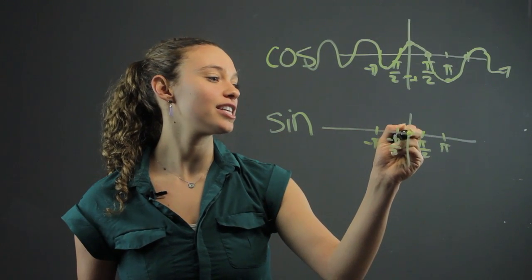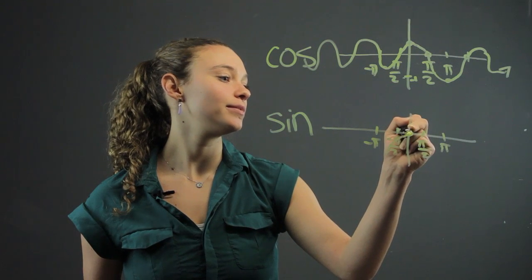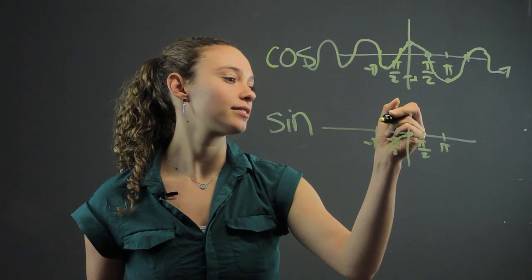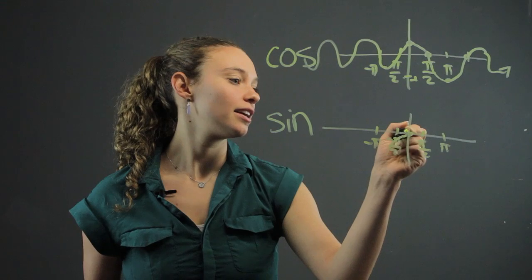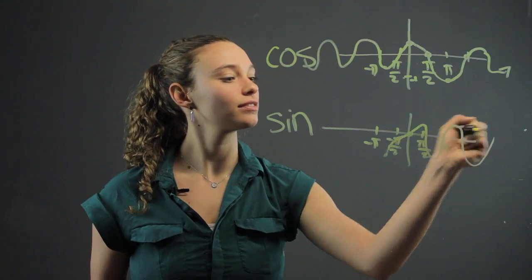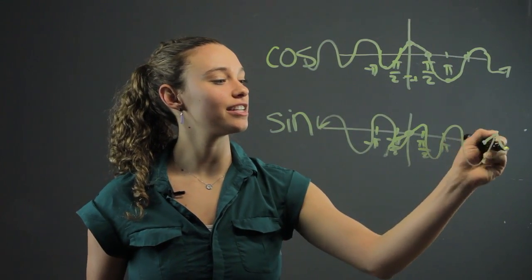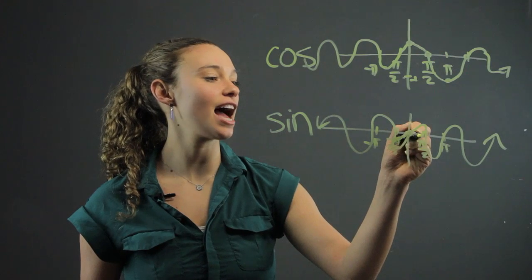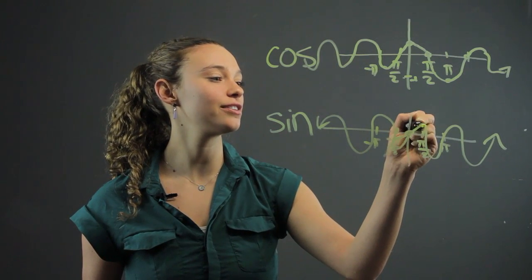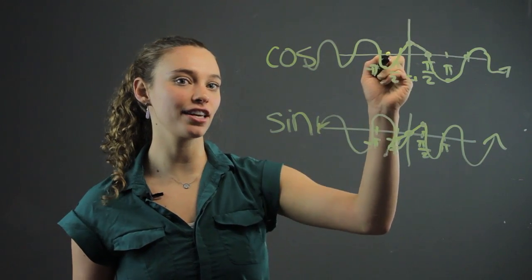So it intercepts the origin, so it's actually going to intercept like this, right? As long as it goes through the origin. So it's actually different. It hits at pi over 2, 1, right? So it's a little bit different than cosine.